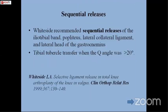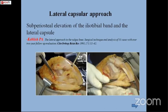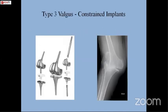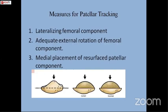Historically, there are different methods of release — sequential release by Whiteside, the lateral capsular approach, and medial imbrication as described by Krackow. These methods are nowadays very less frequently used. If the flexion and extension gaps are very severe and there is severe ligamentous deficiency, then constrained implants have to be used as standard.